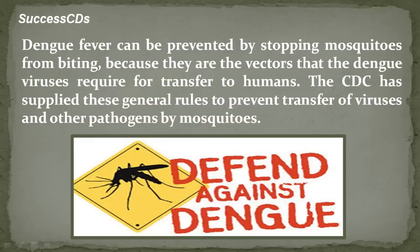Dengue fever can be prevented by stopping mosquitos from biting, because they are the vectors that dengue viruses require for transfer to humans. The CDC has supplied these general rules to prevent transfer of viruses and other pathogens by mosquitos.